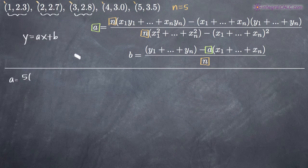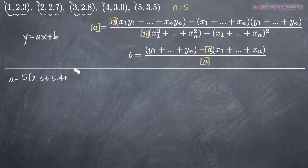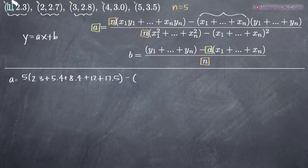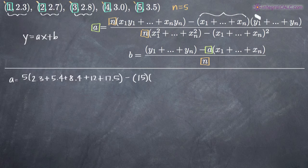We get a equals n times the sum of each x times y coordinate: 1×2.3 + 2×2.7 + 3×2.8, etc. Multiplying those gives 2.3, 5.4, 8.4, 12, and 17.5. Then we subtract the sum of all x coordinates — which is 1+2+3+4+5 = 15 — times the sum of all y coordinates: 2.3+2.7+2.8+3+3.5 = 14.3.